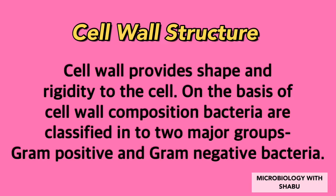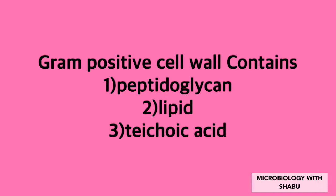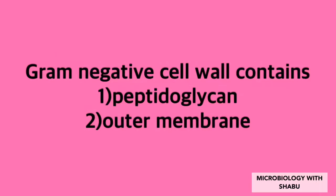Cell wall provides shape and rigidity to the cell. On the basis of cell wall composition, bacteria are classified into two major groups: gram-positive and gram-negative bacteria. Gram-positive cell wall contains: (1) peptidoglycan, (2) lipid, (3) teichoic acid. Gram-negative cell wall contains: peptidoglycan and an outer membrane.